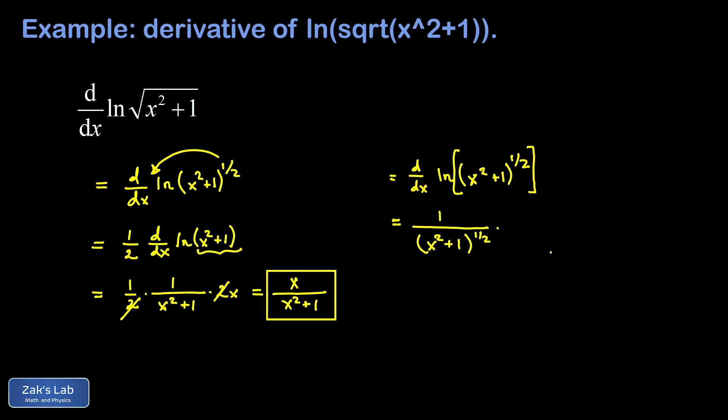Then we need the derivative of x squared plus one to the one half power, which is itself a function composition. So we start by applying the power rule, and we get one half times that inner function to the negative one half power. And then we have to tack on the derivative of the inner function.